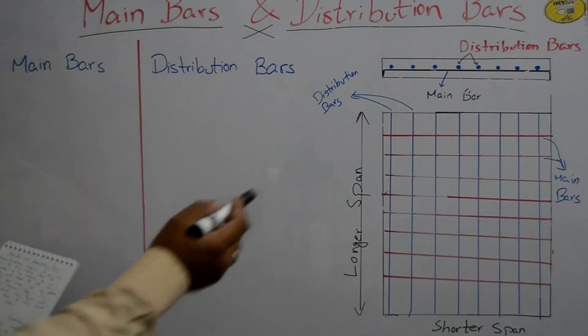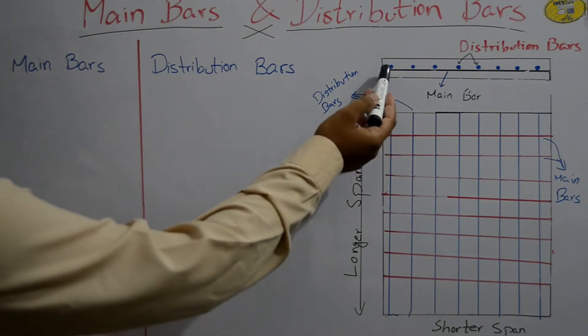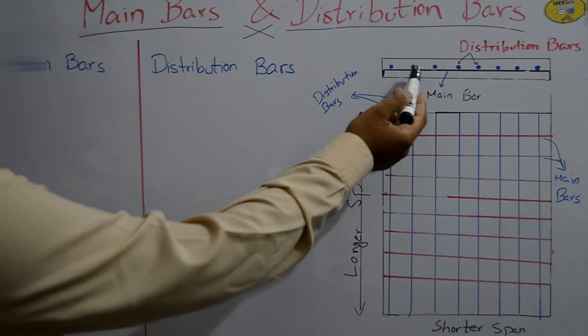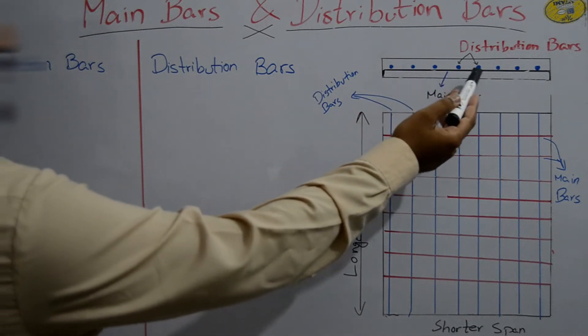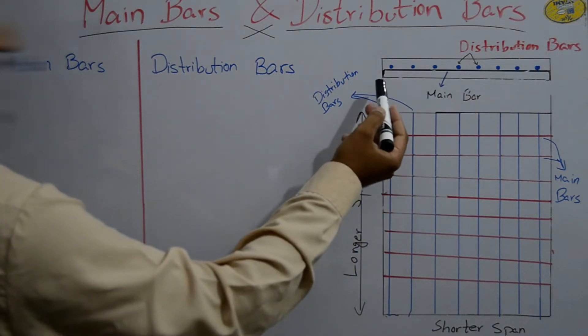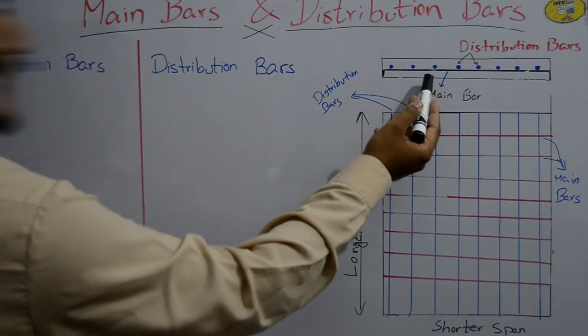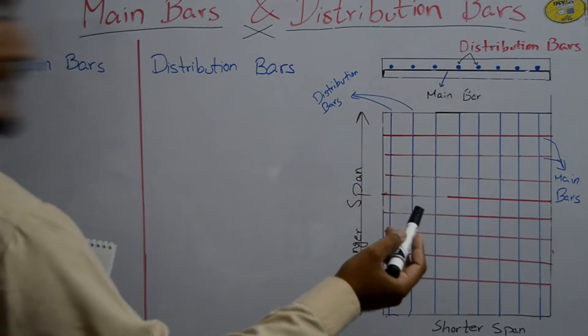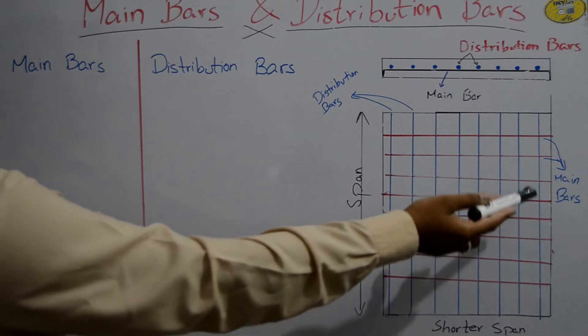As you see in this diagram, the bars that are on the top of the slab are distribution bars, and the bars that are at the bottom of the slab are main bars. Here is the top view of the slab.